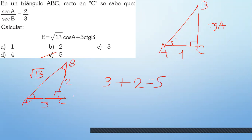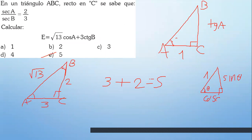Esa es otra forma. Si no recuerdas cómo son los cosenos y senos, simplemente pon una hipotenusa 1 y pon un ángulo. Si la hipotenusa es 1, lo opuesto será seno y el adyacente será coseno. Si la hipotenusa es raíz de 13, multiplica por todo y así va a salir todo.